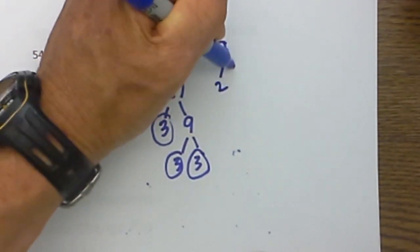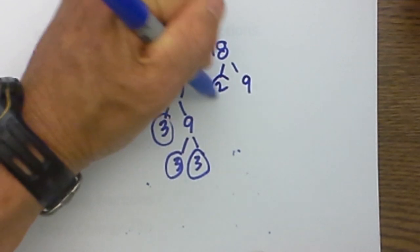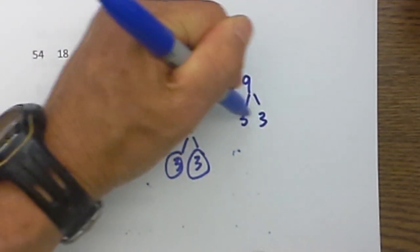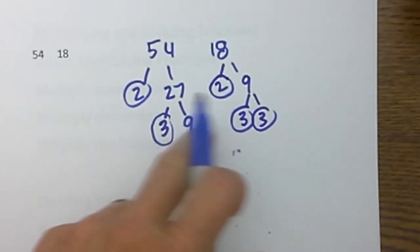Now let's go to 18. 2 times 9 is equal to 18, and then 3 times 3 is equal to 9. Again, I have circled all the prime numbers.